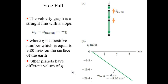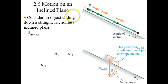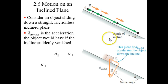Other planets would have different values of g. Section 2.6 is about motion on an inclined plane. Imagine you've got an object which is sliding down a straight, frictionless inclined plane — a plane that's angled at some angle theta relative to horizontal.